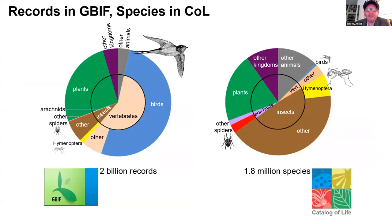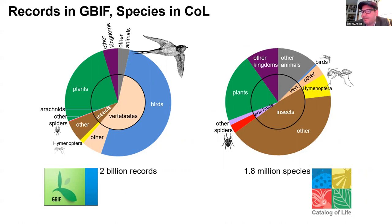When we compare the number of digital records of which species have been found where to the distribution of described species across major taxonomic groups, some pretty clear patterns emerge. About half of the records in GBIF are for birds, which only comprise about 10,000 species worldwide — a tiny fraction of total biodiversity. But arthropods, which make up more than half of the world's known species, are represented in GBIF by a comparatively modest number of records. It's worth pointing out that 2 billion records translates into only about 4 records per square kilometer for all forms of life across the surface of the Earth, and two of those are birds.